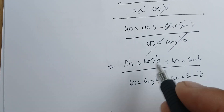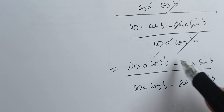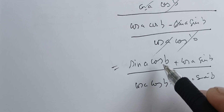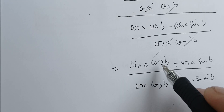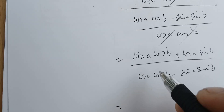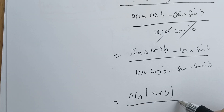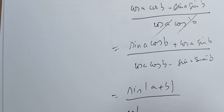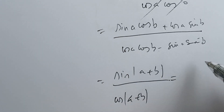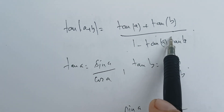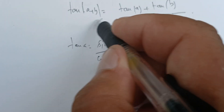The numerator sine a cosine b plus cosine a sine b is just sine of a plus b, and the denominator cosine a cosine b minus sine a sine b is just cosine of a plus b. By definition, this ratio is just the tangent of a plus b, and this is what we want to prove.